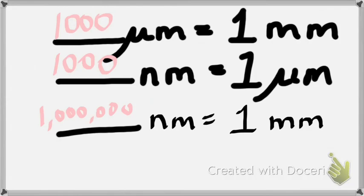When the electron microscope was invented in the 1940s, micrometers became too big to be useful because electron microscopes went so high in magnification. That's where they came up with NM — nanometers. They took 1 micrometer and divided it into 1,000 equal nanometers. So 1,000 times 1,000 equals a million nanometers per millimeter.